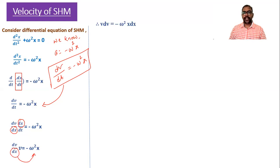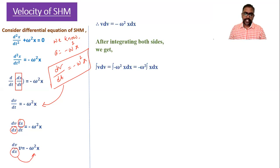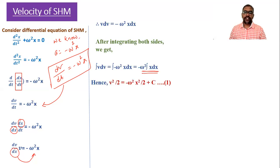To obtain velocity, we integrate both sides. The integration of v dv gives v²/2, and the integration of −ω²x dx gives −ω²(x²/2), since −ω² is a constant. So we get v²/2 = −ω²x²/2 + C, where C is the constant of integration.